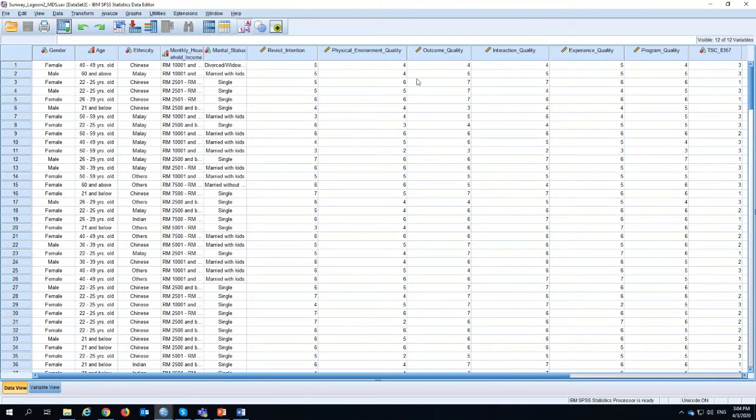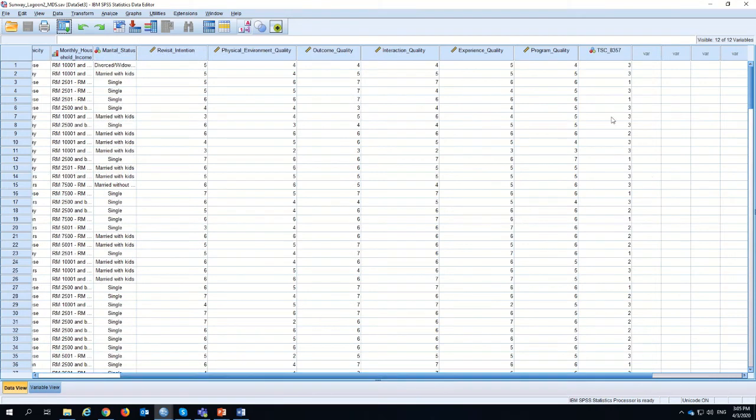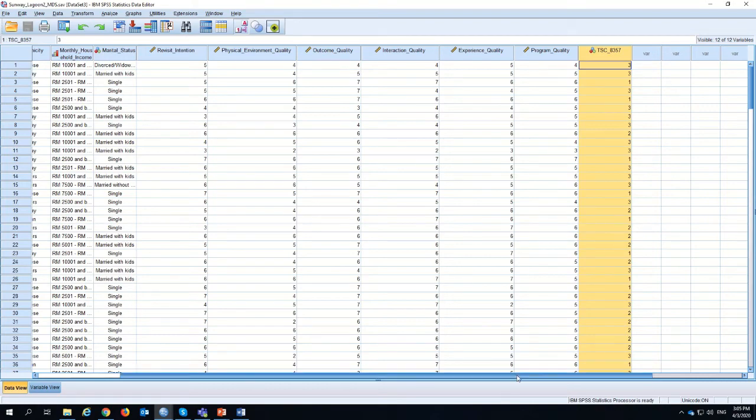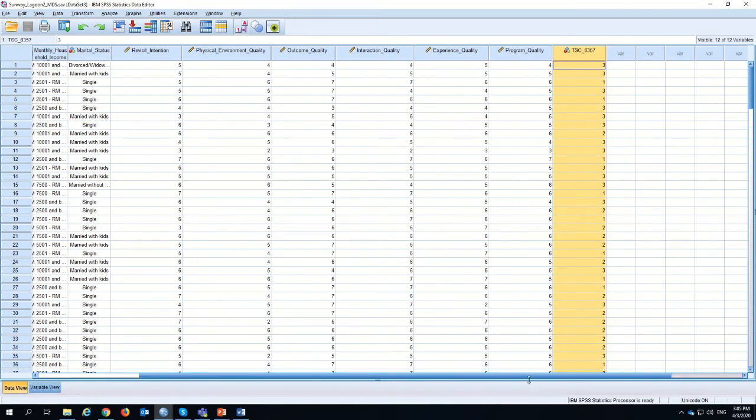I'm going to show you how to simulate it on SPSS. Here's my dataset. If you notice, my dataset now has the demographic variables, the characteristics - revisit intention, physical environment, outcome quality, interaction, experience and program - and I've also got my segmented target. This segmented target shows three different segments. Now I want to see what is important to these three different segments using multidimensional scaling.